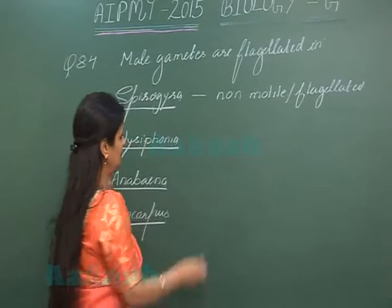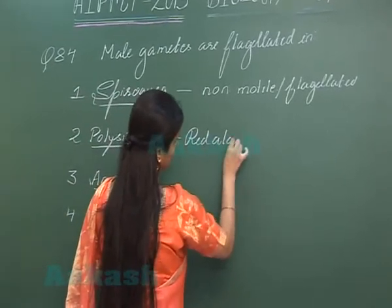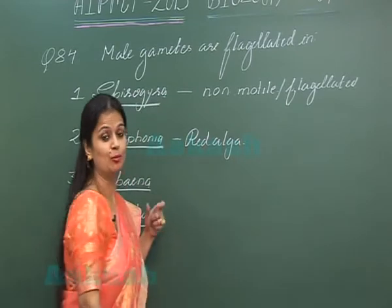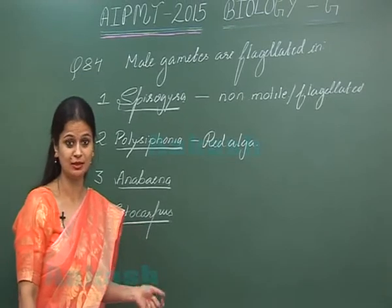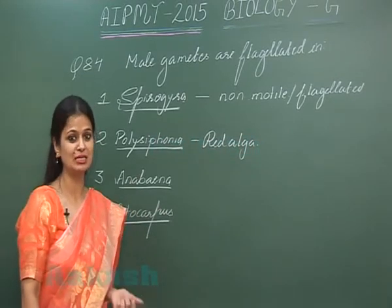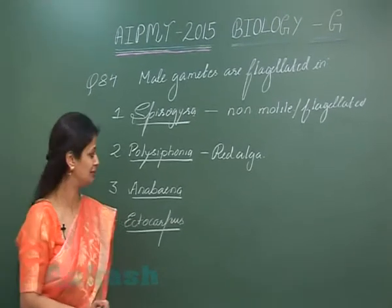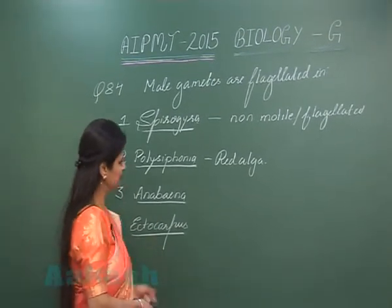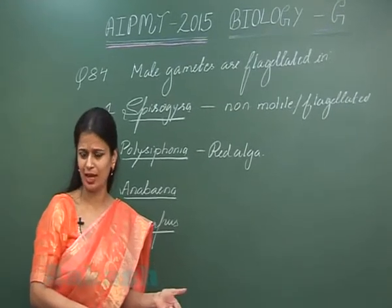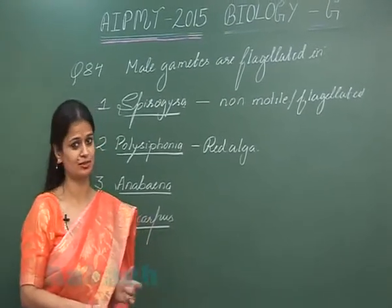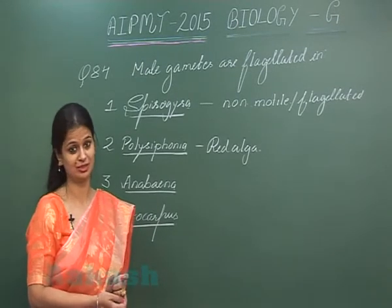Polysiphonia is a red algae, and in red algae motile and flagellated structure formation is absent. The spores and gametes produced in red algae are non-flagellated. Anabaena is a prokaryotic algae, and in prokaryotes sexual reproduction and gamete formation are absent.